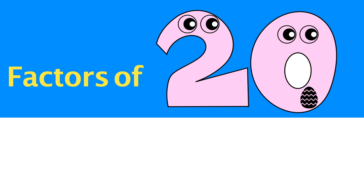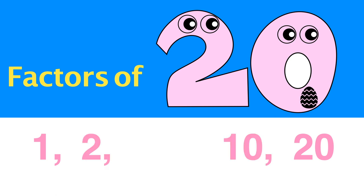To find the factors of 20, let's start from 1. 1 times 20 is 20. 2 times 10 is 20. 4 times 5 is 20. The factors of 20 are 1, 2, 4, 5, 10, and 20.